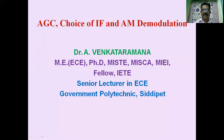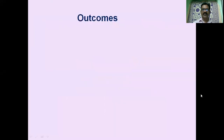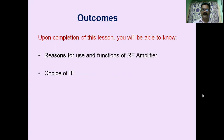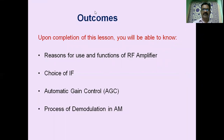Good morning, everyone. In this lesson, we are going to study about automatic gain control, choice of IF, and AM demodulation. The various outcomes of the lesson are: reasons for use and functions of RF amplifier, choice of IF, automatic gain control (AGC) or automatic volume control (AVC), and the process for demodulation in AM.